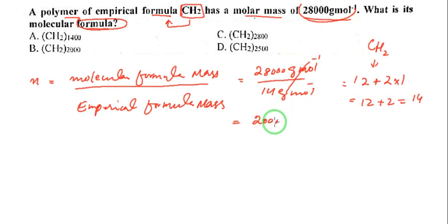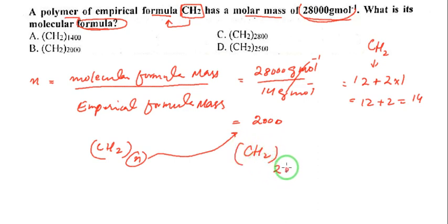The value of n is 2000. CH2 is given here, so n equals 2000. That would be CH2 times 2000 - there are 2000 CH2 units, giving us a long polymer.